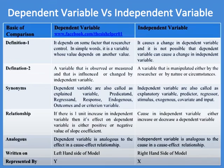Definition 2 of Dependent Variable is that it is a variable that is observed or measured and that is influenced or changed by Independent Variable. Definition 2 of Independent Variable is that it is a variable that is manipulated either by the researcher or by nature or circumstances. The synonyms of Dependent Variable are also called Explained Variable, Predictant, and Regressand.